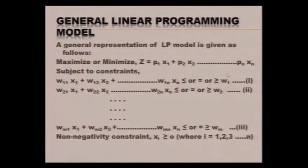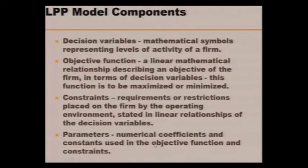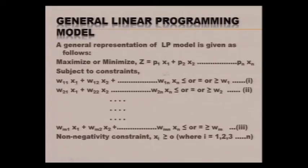Constraints — we have m number of constraints, from the first up to the mth. These may be in the form of equations, greater-than constraints, or less-than constraints. Constraints represent the requirements or restrictions placed on the firm by the operating environment and are stated as linear relationships of decision variables. Parameters are the numerical coefficients and constants used in the objective function and the constraints — these are coefficients p1, p2, ..., pn and w1, w2, ..., wm.